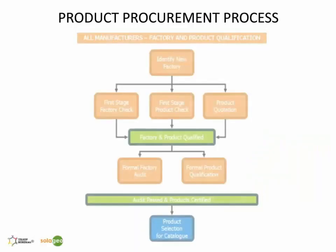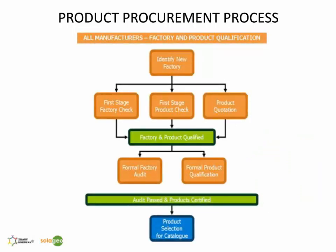At Trade Without Borders, we have well-established processes in place. What you see here is a high-level flowchart outlining our product procurement process. Every product on the Solangeo platform has been fully vetted — the factory will have been checked, the product fully evaluated, and the factory audited before we include any products on the site. This is just a high-level view of our product procurement process, but of course there is a lot more detail involved.